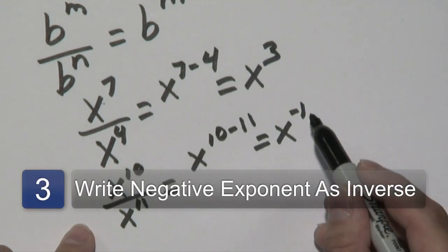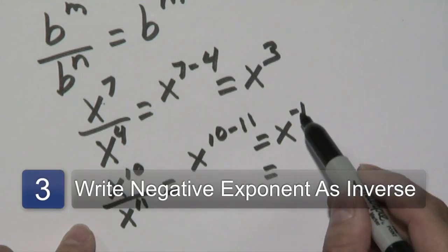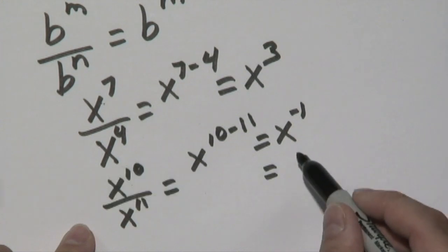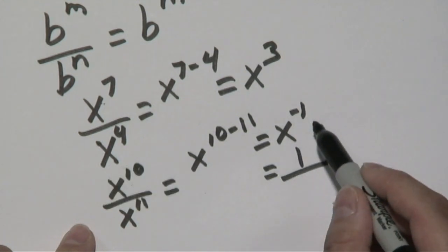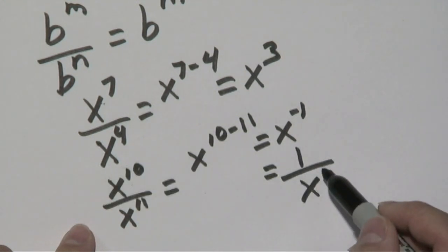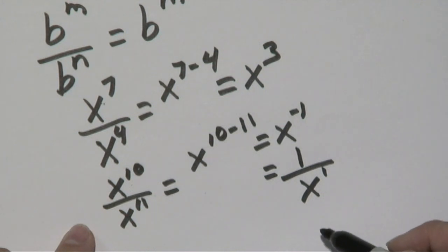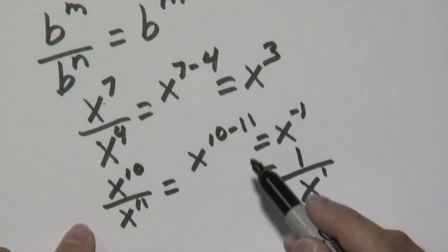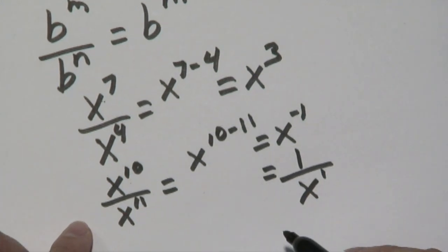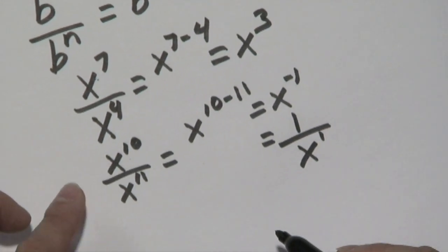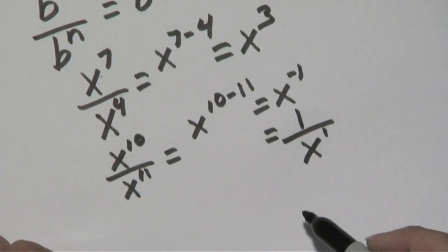Now if you already know the negative exponent rule, as you might imagine, if you have a negative exponent here, you can move it down to where it becomes a positive exponent. And that's an example of the negative exponent rule. So in a sense, this example uses two rules at once if you want your final answer in positive exponent form.